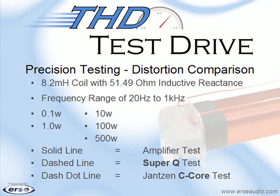The solid line will represent the pre-recorded amplifier test. The dash line will represent the SuperQ test. And finally, the dash-dot line will represent the Janssen C-Core test.